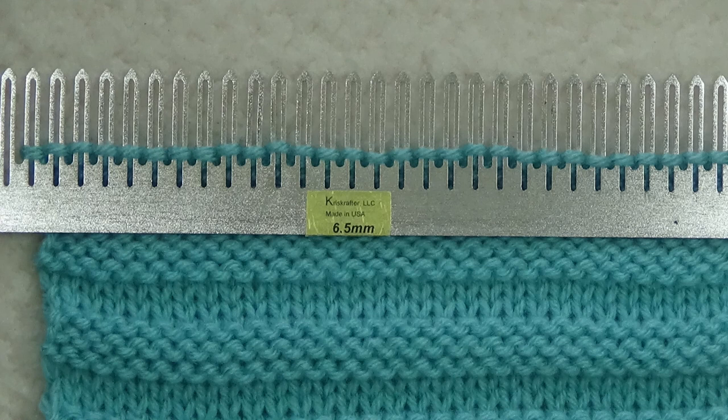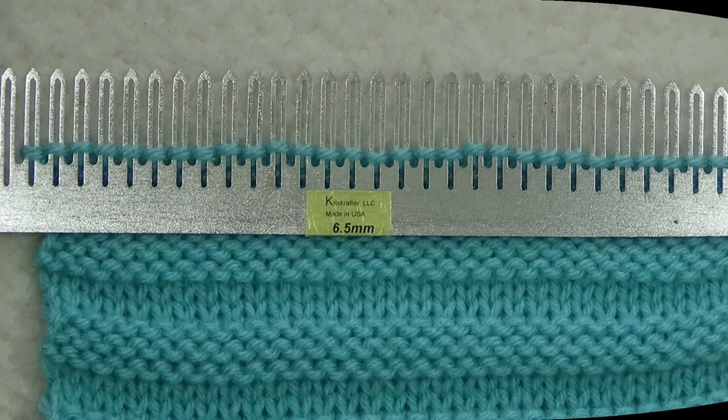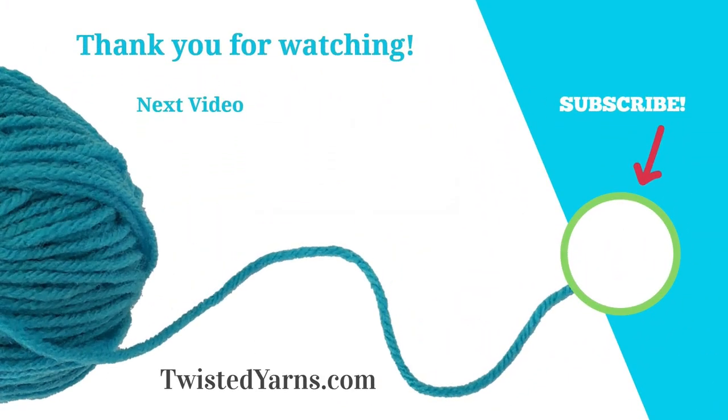In part three, we will learn to make the Quaker stitch, which is sometimes called the Ridges stitch. I hope you enjoyed watching this video. Please take a moment to subscribe and ring the bell to receive notifications of upcoming videos and events. Happy Machine Knitting!